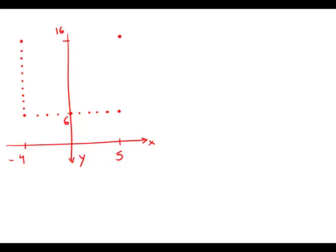If the X and Y coordinates of P, Q, and R are to be integers that satisfy the inequalities X is between negative 4 and positive 5, and Y is between 6 and 16, how many different triangles can be constructed with these properties?